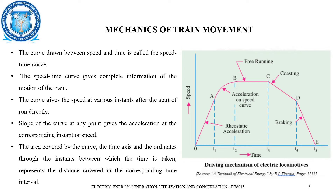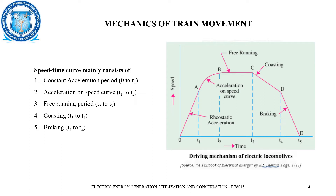Let us consider the speed-time curve in 5 different sections. The initial section from 0 to T1 (point O to A) refers to the constant acceleration period. The next period from T1 to T2 (point A to B) is the acceleration on a speed curve. From B to C, that is T2 to T3, is the free running period. From T3 to T4 (C to D) is the coasting period. And finally, T4 to T5 is the braking period.